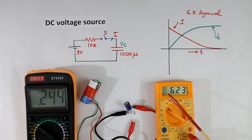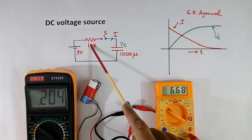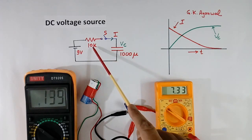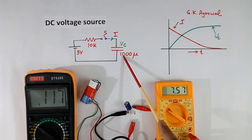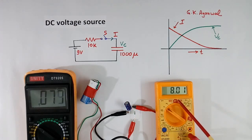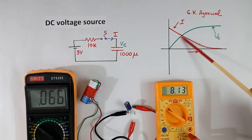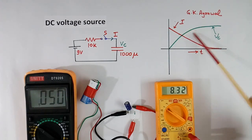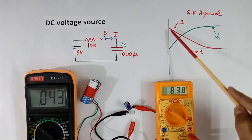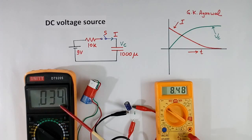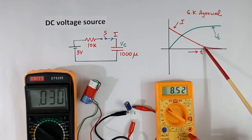Slowly current is coming down. Now time constant is about 10K into 1000 micro — about 10 seconds. Now you see earlier this voltage was increasing fast, now it is increasing slowly because we are further along the curve. Similarly for current, earlier it was coming down fast but now it is coming down slowly, because we are here on the curve.